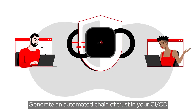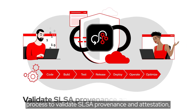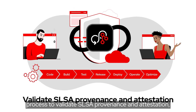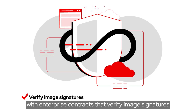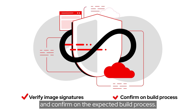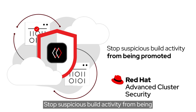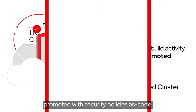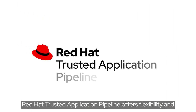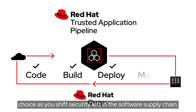Generate an automated chain of trust in your CI/CD process to validate SLSA provenance and attestation, with enterprise contracts that verify image signatures and confirm the expected build process. Stop suspicious build activity from being promoted with security policies as code. Red Hat Trusted Application Pipeline offers flexibility and choice as you shift security left in the software supply chain.